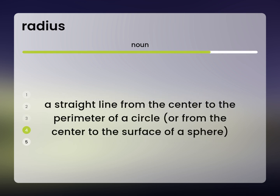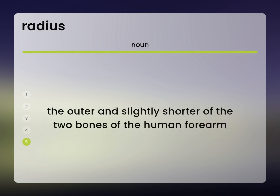A straight line from the center to the perimeter of a circle, or from the center to the surface of a sphere. The outer and slightly shorter of the two bones of the human forearm.